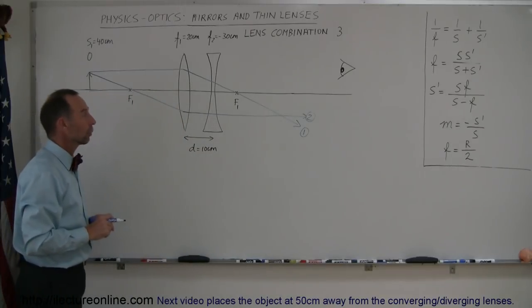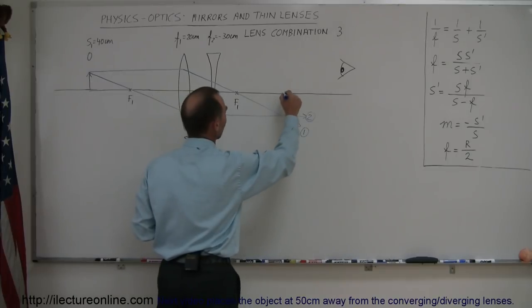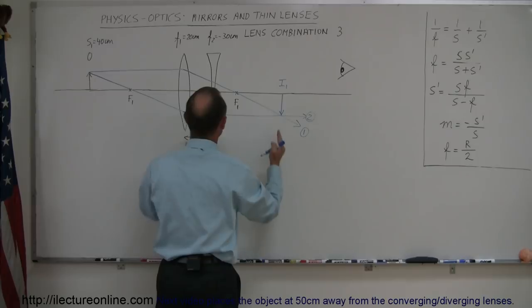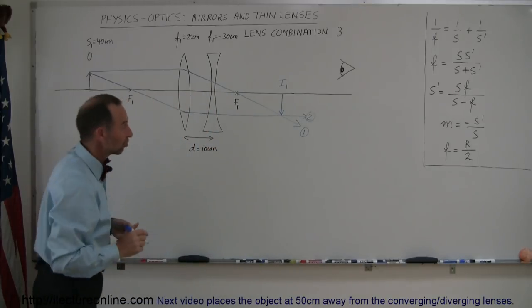The observer looking at those rays says sure enough they come together, and so it looks like there's going to be an image formed right here. That will be considered image one and the distance from the first lens to the image will be the image distance.